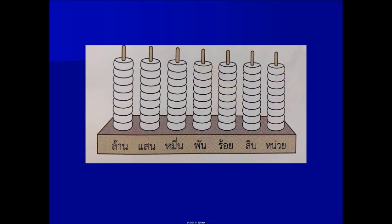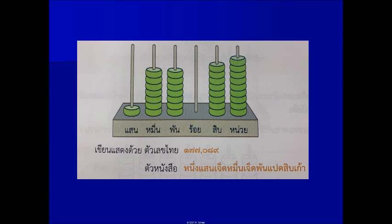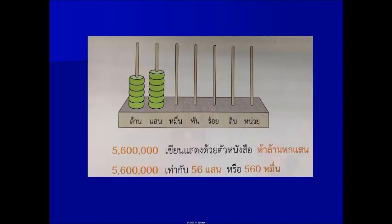ค่าประจำหลัก หลักเริ่มจากหลักหน่วย หลักสิบ หลักร้อย หลักพัน หลักหมื่น หลักแสน และหลักล้าน ตัวอย่างการเขียนแสดงด้วยตัวเลขไทยของ 177,089 เขียนเป็นตัวหนังสือได้ดังนี้ 177,089 จากหลักหน่วยถึงหลักล้าน 5 ล้าน 6 แสน เขียนแสดงได้เป็น 5 ล้าน 6 แสน เท่ากับ 56 แสน หรือ 560,000